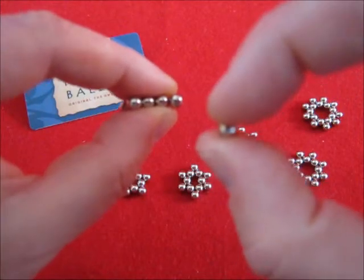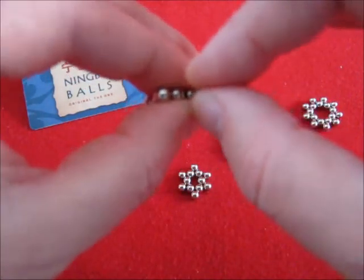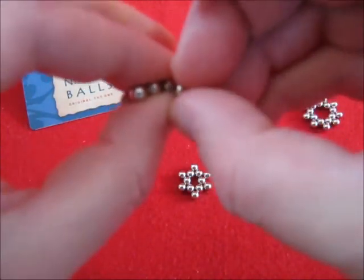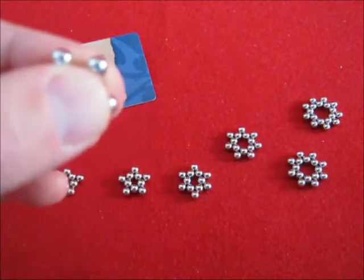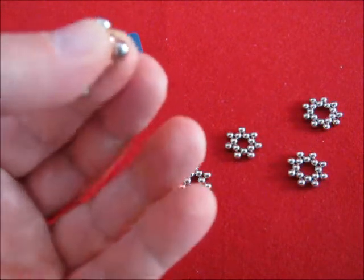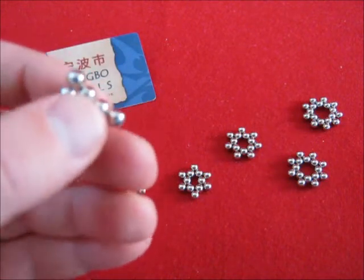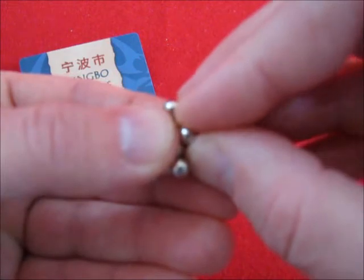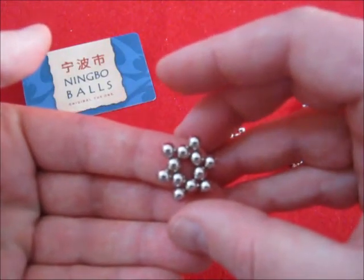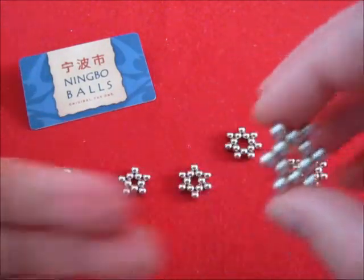And then you take a single ball and add it to the middle. Take another single ball. And there we go. The 6 pointed star of David.